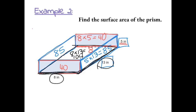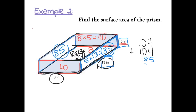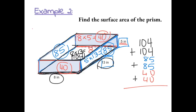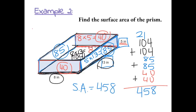To find the total surface area, we add up all the areas. The bottom is 104, and we add it twice because we also have the top, which is also 104. Then we have 85 plus 85, and 40 plus 40. Adding: 5+5=10, plus 4 is 14, plus 4 is 18; then 8+8=16, plus 4 is 20, plus 4 is 24, plus 1 is 25; then 2+1+1=4. Our total surface area is 458 inches squared.